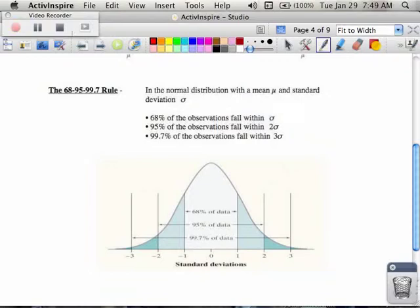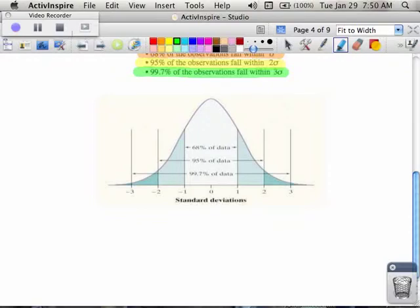There is a special rule called the 68-95-99.7 rule: 68% of our observations or data will fall within one standard deviation, 95% of our observations fall within two standard deviations, and 99.7% of our observations fall within three standard deviations. On the AP exam, they talk a lot about this rule, it's kind of an important concept, it's pretty easy to find certain things.